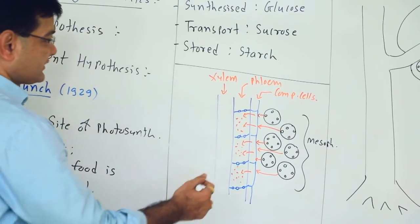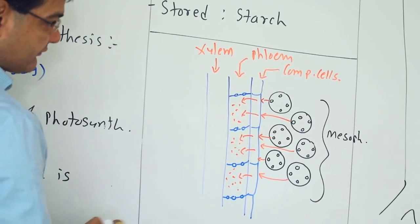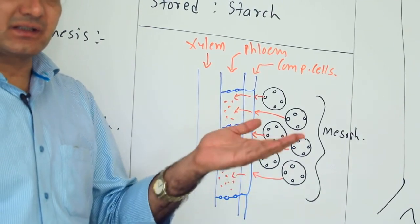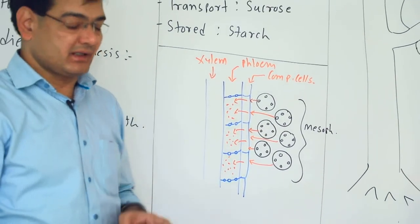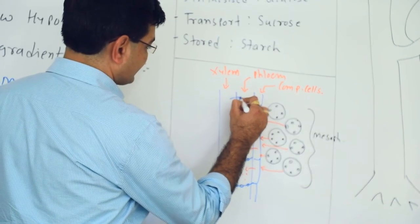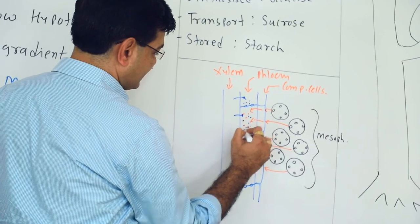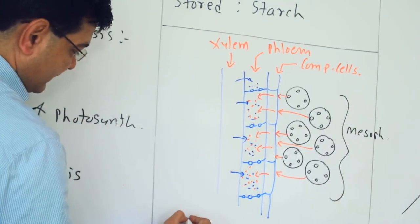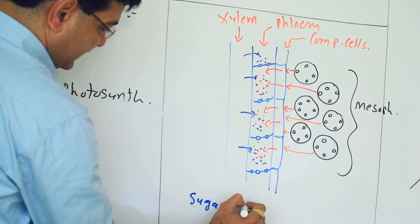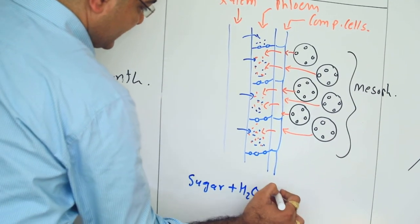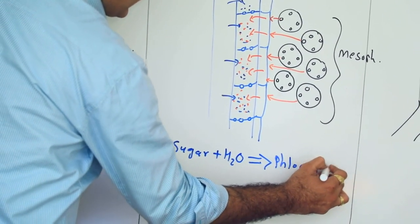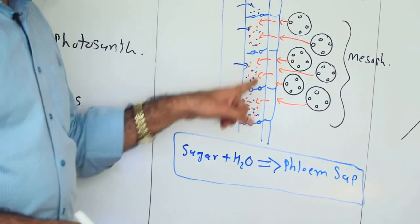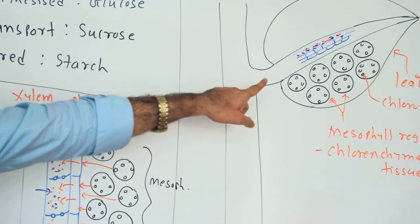When the food material gets deposited inside the phloem or the sieve tube, the water potential in the phloem decreases. When concentration increases, water potential decreases, and as a result, water from the surrounding xylem also gets deposited inside the sieve tube. Sugar plus water together constitute the phloem sap, and this phloem sap forms inside the phloem of the leaf as food gets deposited inside the phloem.